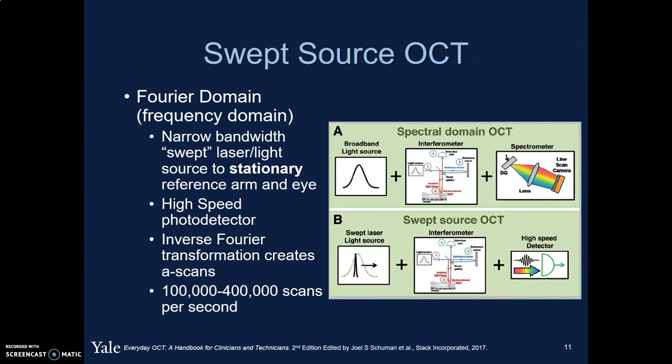Finally, there's swept source OCT. This is similar to spectral domain OCT in that it's frequency domain-based, but instead of using a broad bandwidth, it uses a narrow bandwidth laser that's sweeping back and forth rapidly to generate the interference. It requires a high-speed photodetector, making it a little more expensive. It uses an inverse Fourier transformation to generate the A-scans, and as a consequence it's faster, doing 100,000 to 400,000 scans per second.